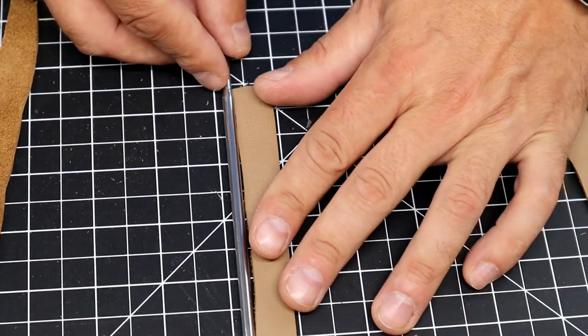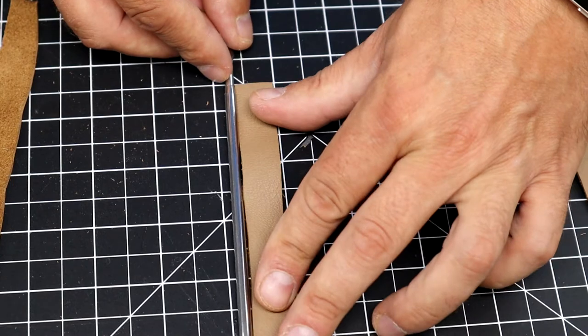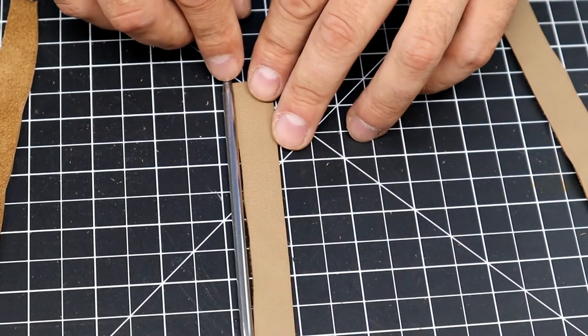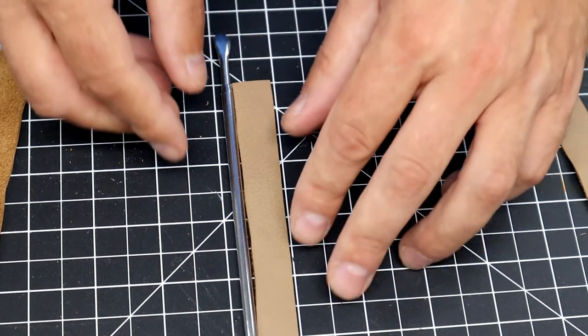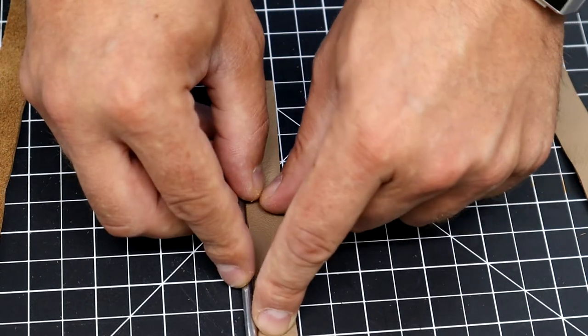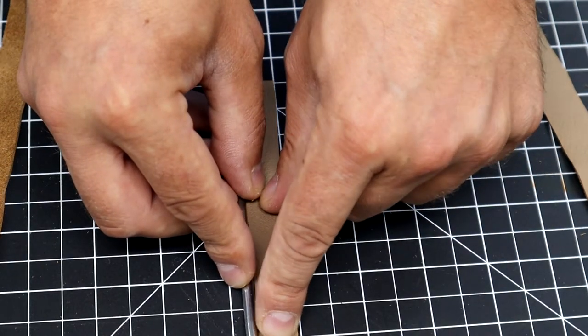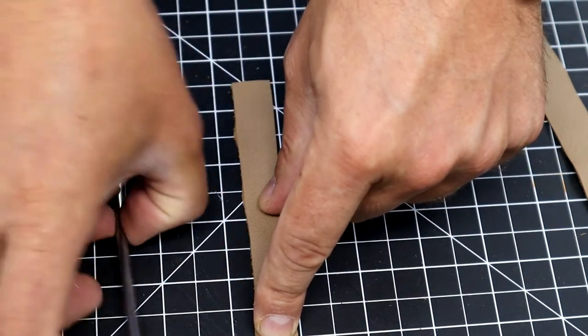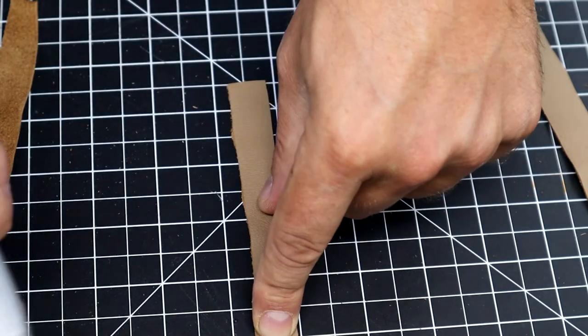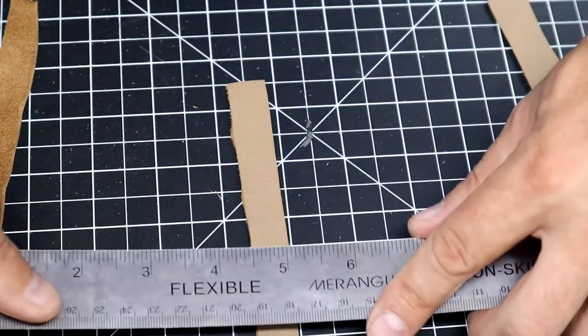Now I'm going to measure the length that I want. So I want it to just cover this tip here. And then I'm going to bring it up to that chamfer, maybe just a little past. So I'm going to cut.